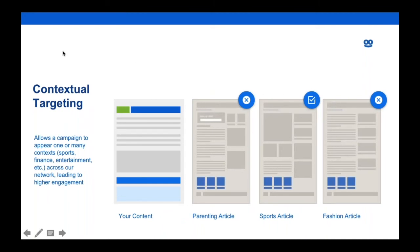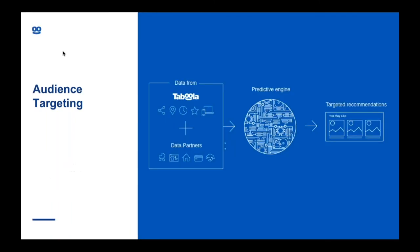We also have contextual targeting, which allows you to pick the type of site you'll show on based on its category. We recommend starting with a run-of-network campaign and then setting up a separate campaign with a higher CPC targeting one or a few specific contexts, to test if you can get more scale based on the kind of users you have. You'll need to talk to your Taboola rep before using this feature. Audience targeting is an advanced option where we use data from third parties to be more specific with who you target — this can be both B2B or B2C, and you can discuss this on a case-by-case basis with your Taboola contact.